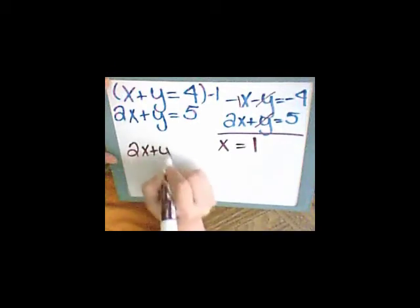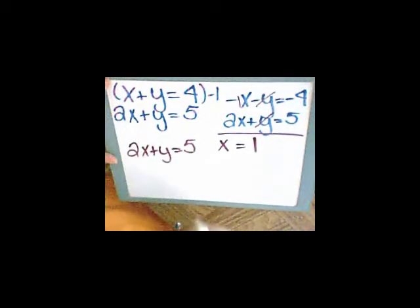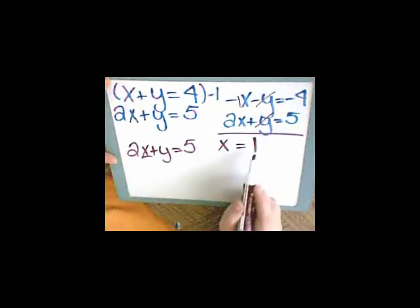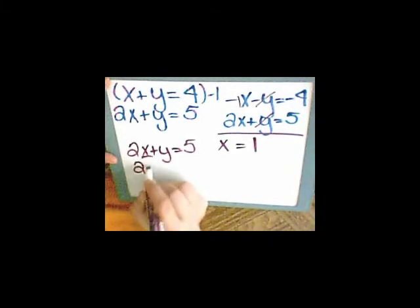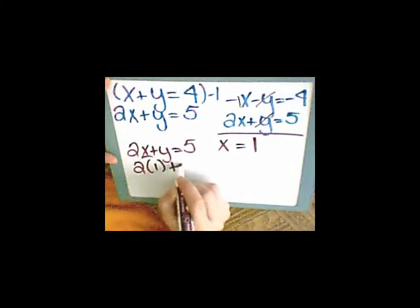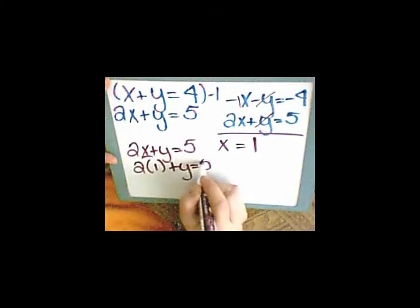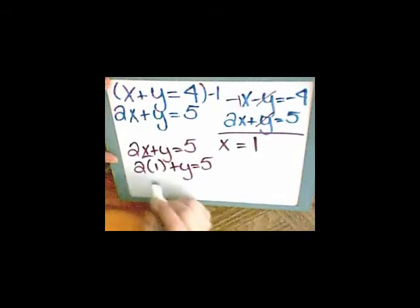2x plus y equals 5. But in this case I know what x is. x is 1. So I'm going to substitute 1 in for x. 2 times 1 is 2.